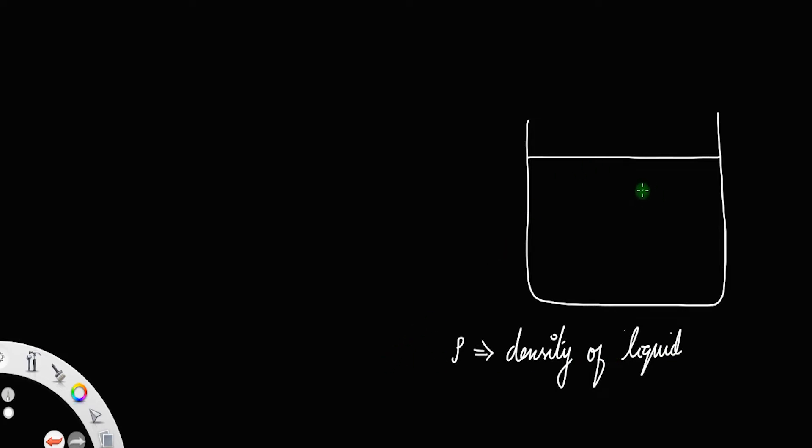Let a cylindrical body be immersed in this liquid. Let sigma be the density of the solid.